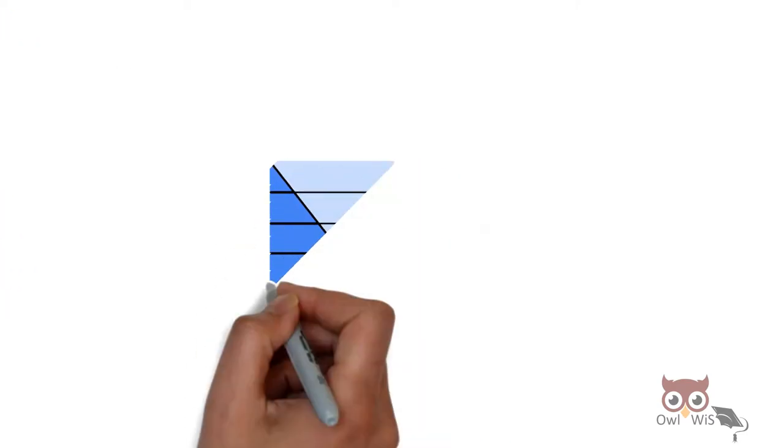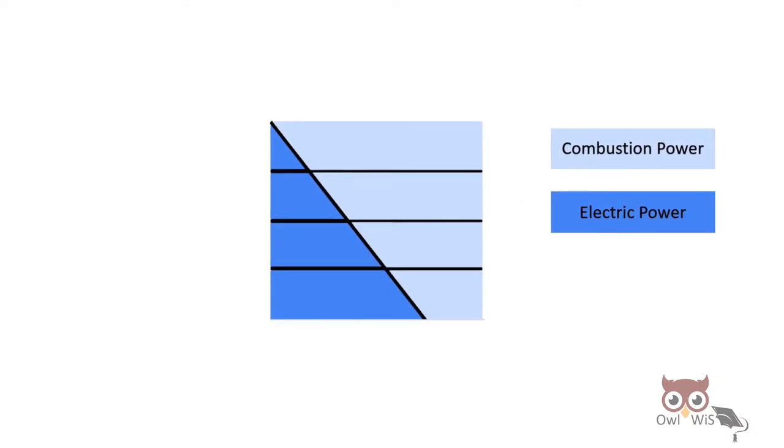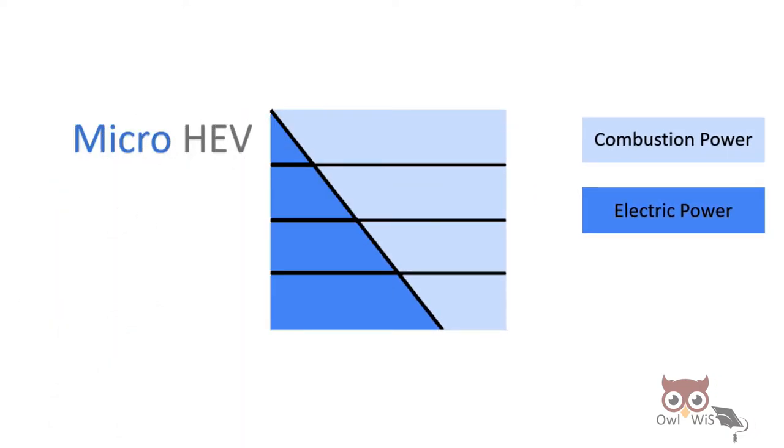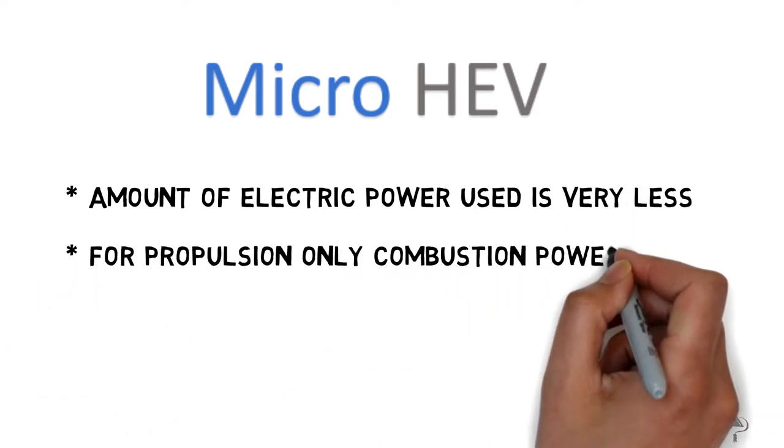Let us understand this. Here one color represents combustion power and other is electric power. In the case of micro-HEV, this is the power division between the two sources. Here the amount of electric power used is very less. Also, for propulsion only combustion power is used. BMW 1 series is an example of micro-HEV.